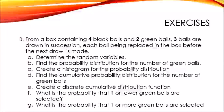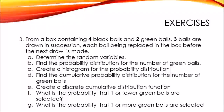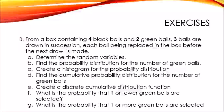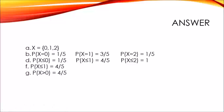Lastly, I have prepared an activity. From a box containing four black balls and two green balls, three balls are drawn in succession, each ball being replaced in the box before the next draw. The questions are: A) determine the random variable; B) find the probability distribution for the number of green balls; C) create a histogram; D) find the cumulative probability distribution for green balls; E) create a discrete cumulative distribution function; F) what is the probability that one or fewer green balls are selected, and what is the probability that one or more green balls are selected?